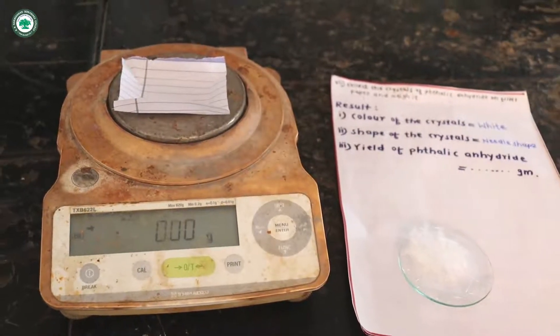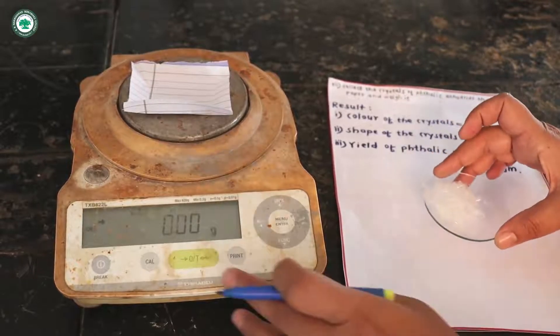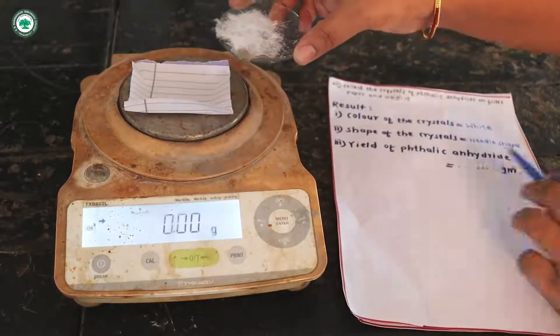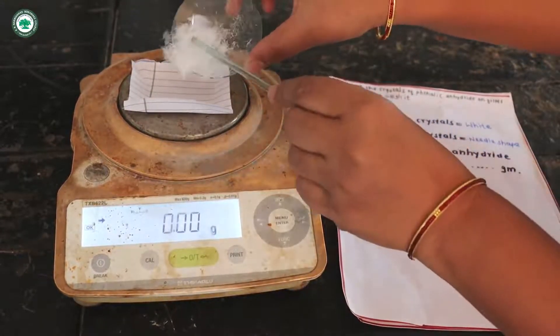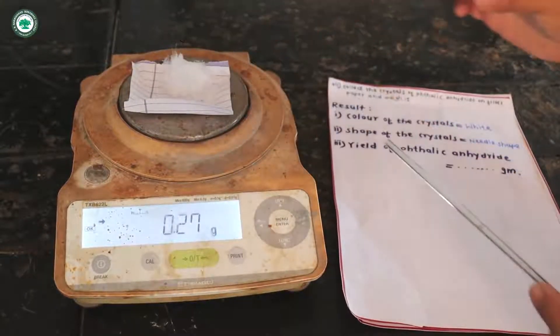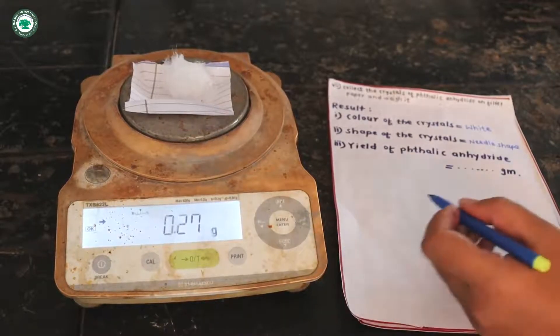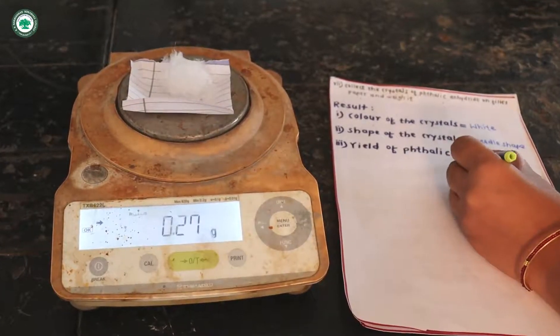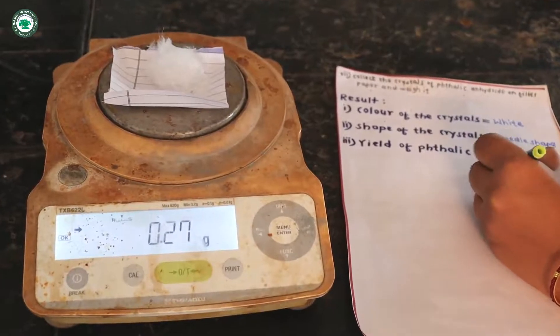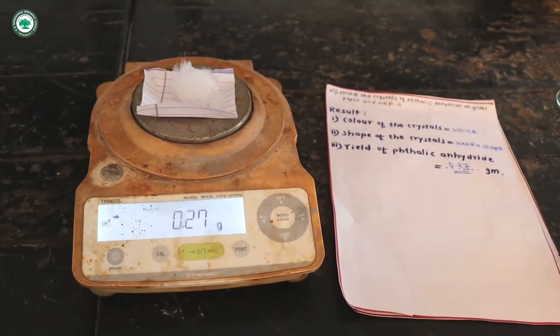And what is the yield of phthalic anhydride? It is 0.27 grams, this is the yield of phthalic anhydride. Thank you.